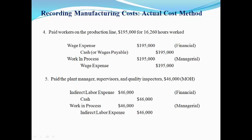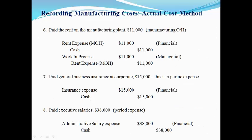The next transactions record direct labor worked on the production line and the cost of manufacturing management — these costs are manufacturing overhead. The first entry is made by the financial accountant and the second entry is made by the managerial or cost accountant to move the cost to be part of inventory. The next entry for rent is recorded the same way as the last transaction, since it is also a manufacturing overhead account.